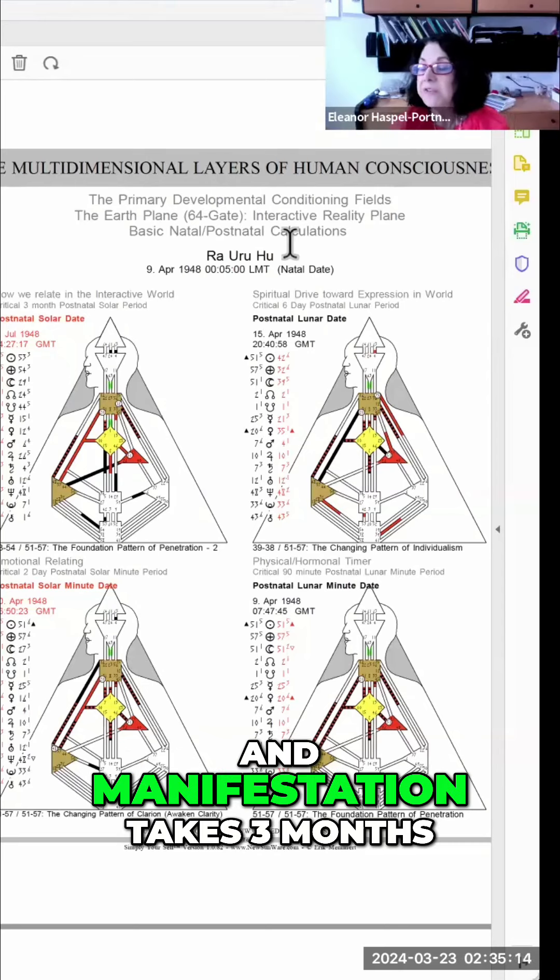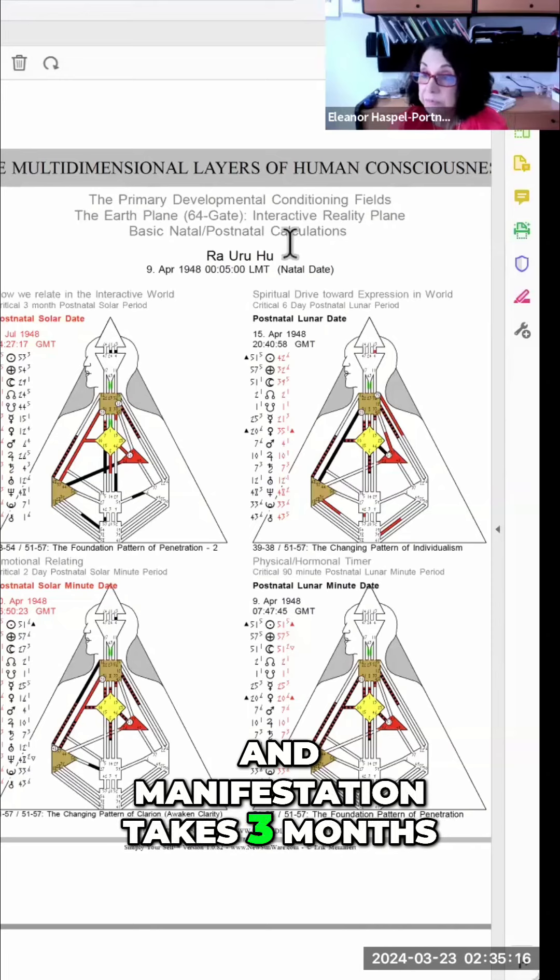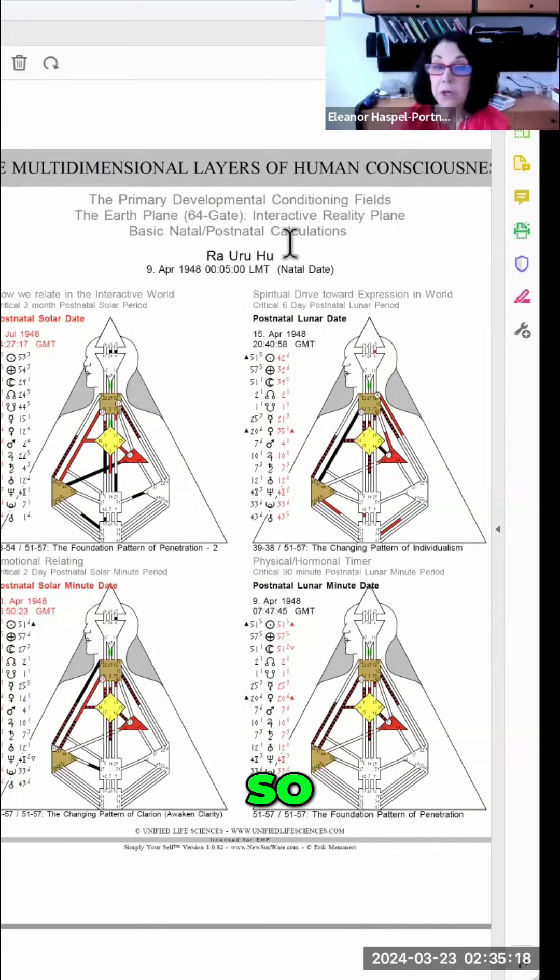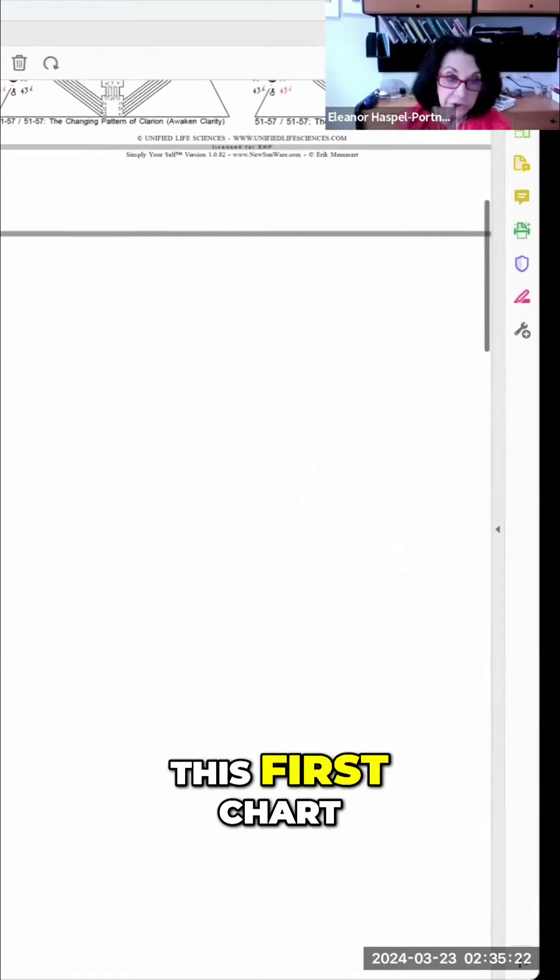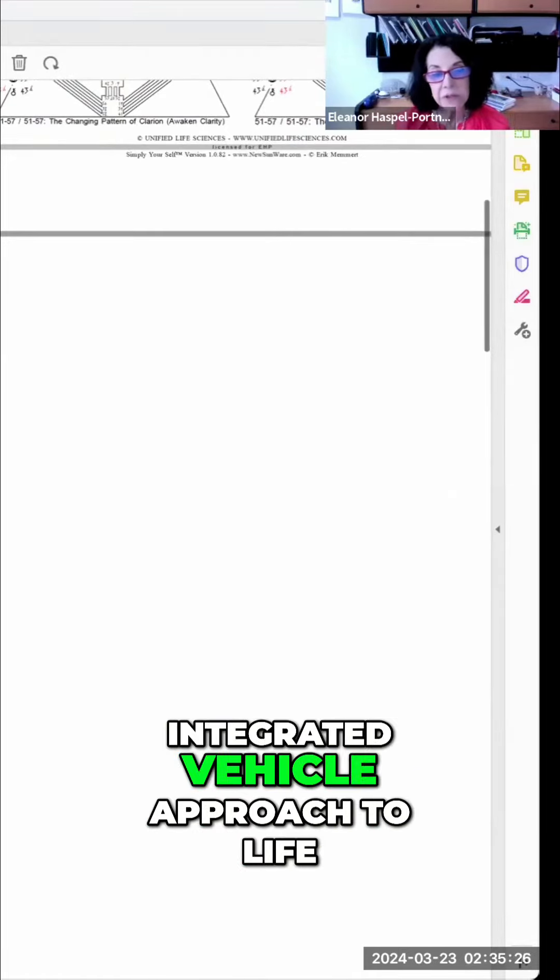And manifestation takes three months. So at birth, this first chart is this first natal integrated vehicle approach to life.